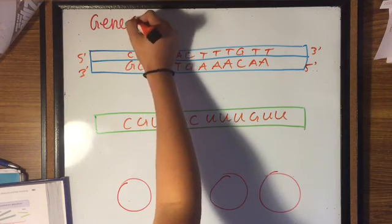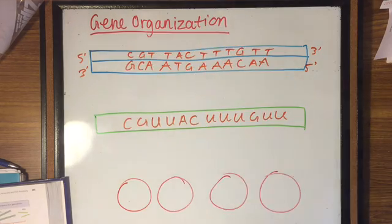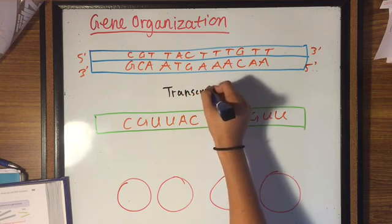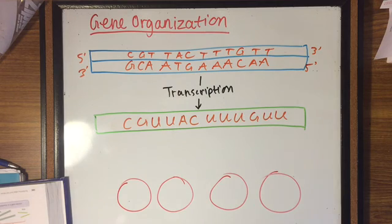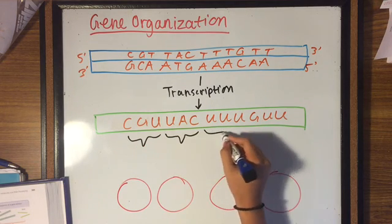Let's start off by talking about some gene organization. DNA is transcribed into RNA through the process of transcription, which is what we talked about in our last video. In the RNA molecule, there are three-letter sequences that are called codons.